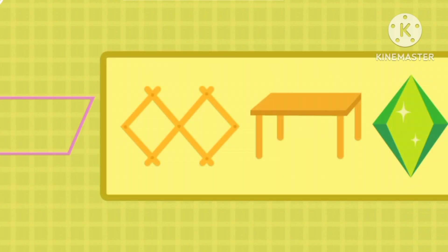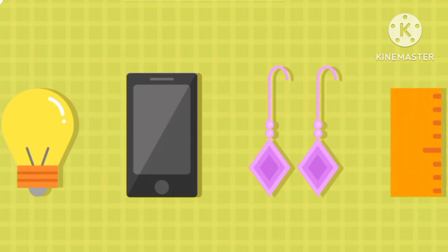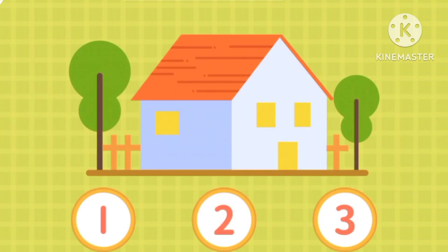These are parallelogram friends. Can you spot them? It's the wings. The wings are a parallelogram. How many are there? Only one.